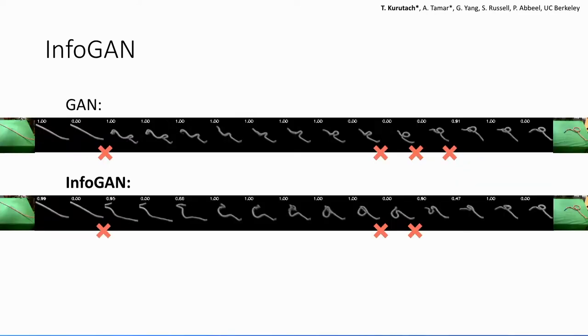So if we apply this InfoGAN idea, you can see that it works a bit smoother, but there's still some transitions that are not reflected in the data.